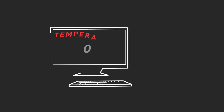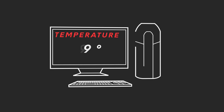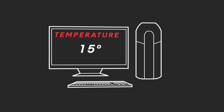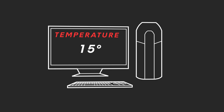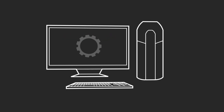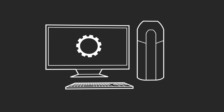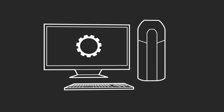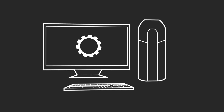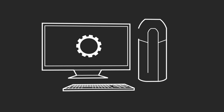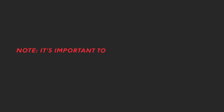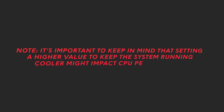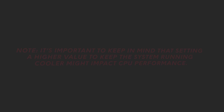The temperature ranges in values between 0 and 15, where increasing the TCC Offset number will reduce the maximum CPU temperature allowed by the system, while using a lower value will allow the CPU to reach higher temperatures whenever needed. It is important to keep in mind that setting a higher value to keep the system running cooler might impact the CPU performance.